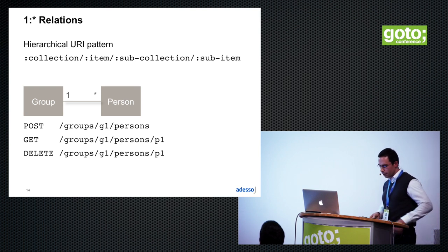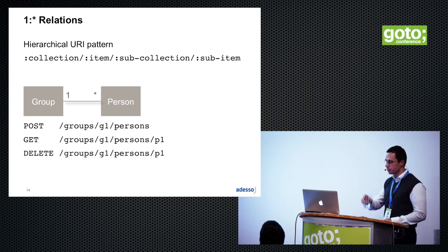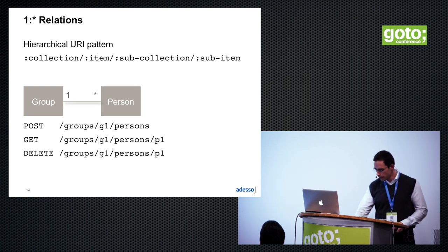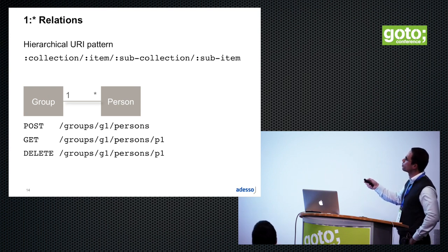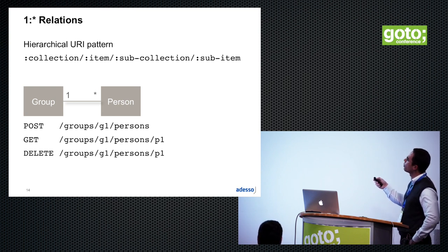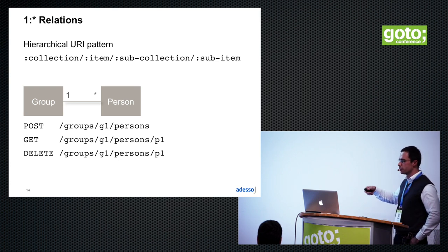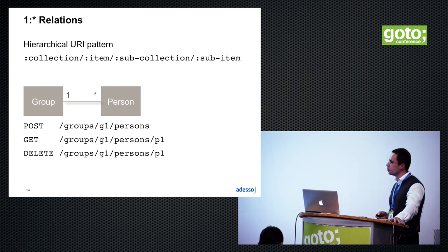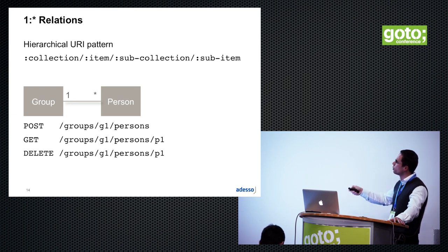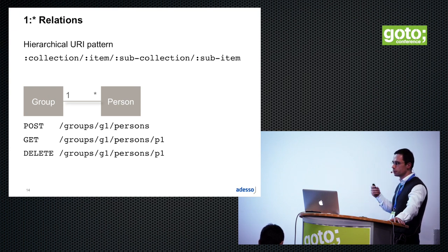What about relations? These are also important for proper URI design. Usually URI design follows a hierarchical pattern, which is very easy and effective. We start with a collection, and this has an item. There is a sub-collection of sub-items, and there could be a sub-sub-collection and so on. It is very handy to model one-to-one and one-to-many relations.